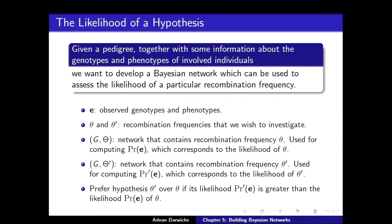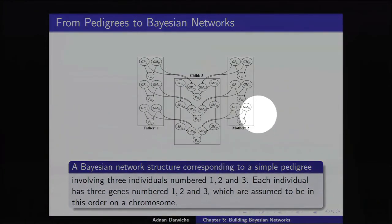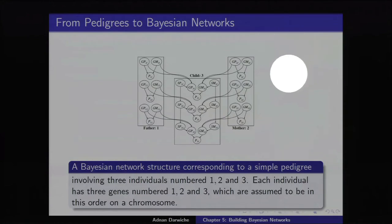Now let's look at the network structure. It's for a simple pedigree: two parents, one offspring, and three genes. The actual networks from real genetic analysis problems can have tens of thousands of nodes. We have three individuals: the father, the mother, and the child. The father and mother are founders — they don't have parents in the pedigree, so they're the roots. We also have three genes.